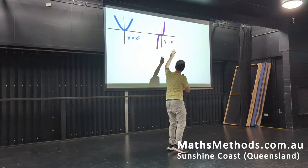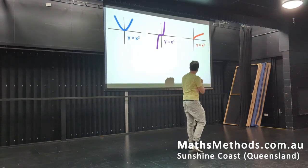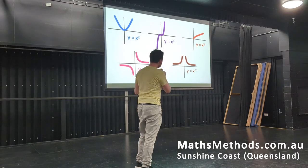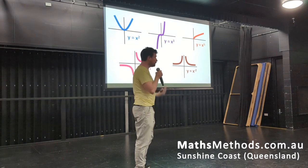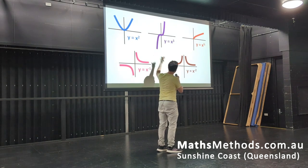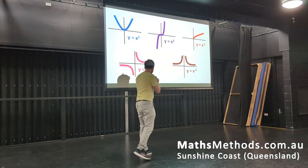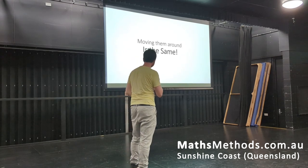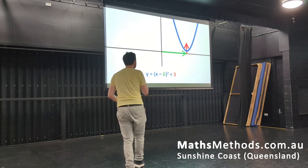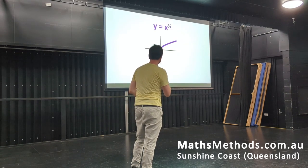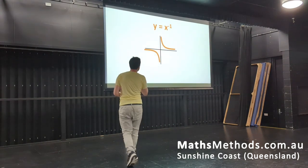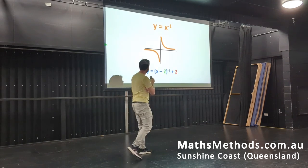You've got parabolas, cubics, your square root function, and your hyperbola. What you'll notice is the shape of the graph is found by just looking at what the power is. So if you've got a power of 3, that's cubic; a half gives you the square root function; and negative 1 will be a hyperbola. And moving them around is all the same. So we move this one around — 6, 3. This one, same deal, move it over by 2, move it up by 2. And with a hyperbola — 2, 2.